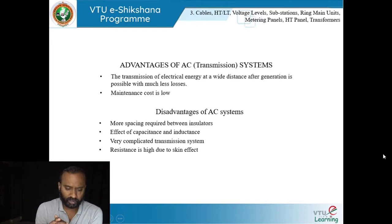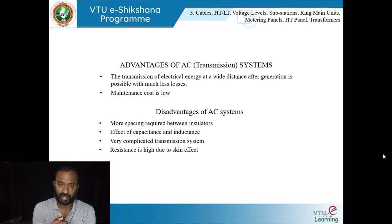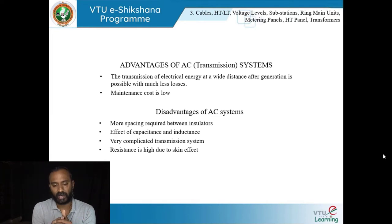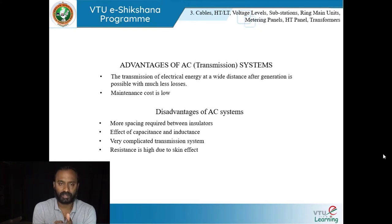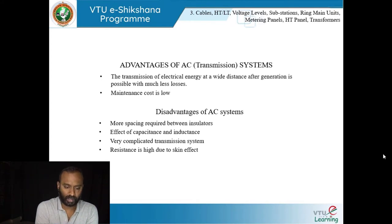Moving on, we have been discussing AC and DC. The advantages of AC transmission systems: AC is efficient to transmit electrical energy over a wide distance with low maintenance cost. Disadvantages include more spacing required between insulators, effects of capacitance and inductance, a very complicated transmission system, and resistance is high due to skin effect.